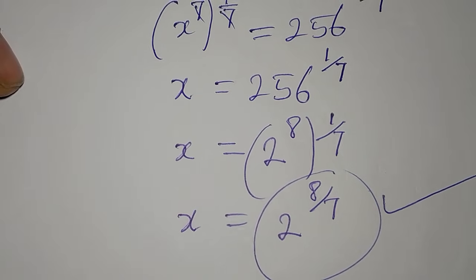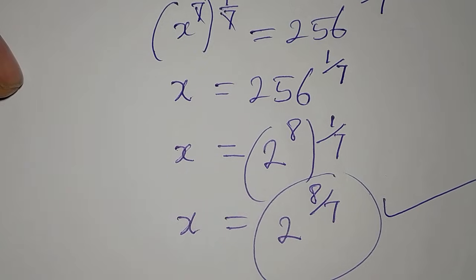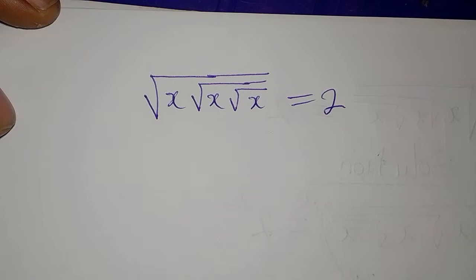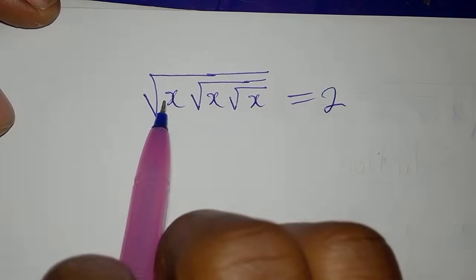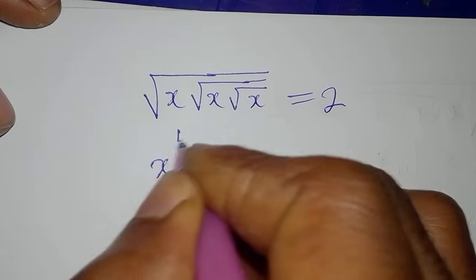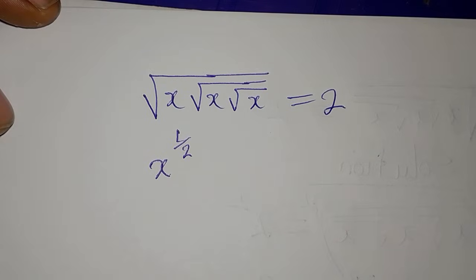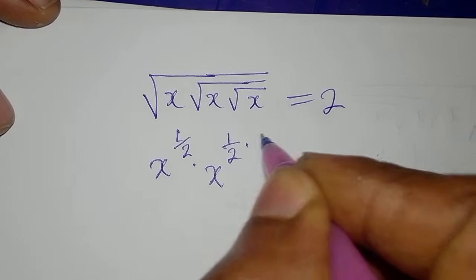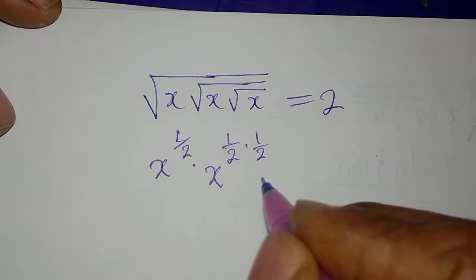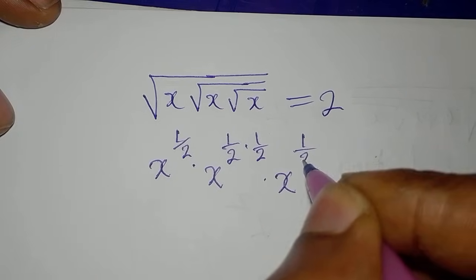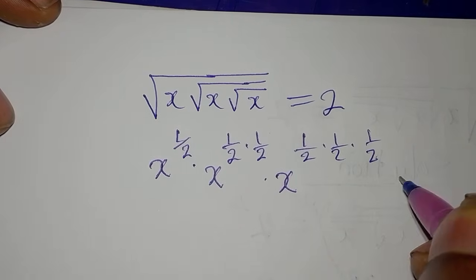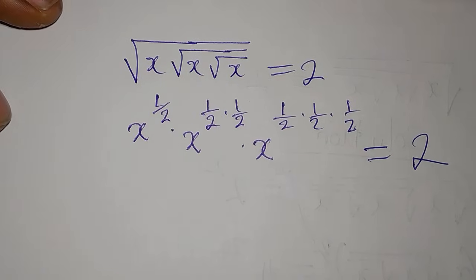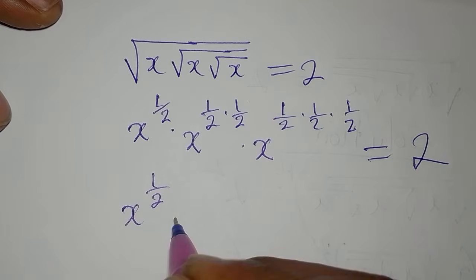Let's go to the second method, which may be quicker if you're not comfortable with the first. The first x is under one square root sign, so its power is 1 over 2. The second x is under two square root signs, giving x to the power of 1 over 2 times 1 over 2. The third x is under three, giving x to the power of 1 over 2 times 1 over 2 times 1 over 2. All of this equals 2.